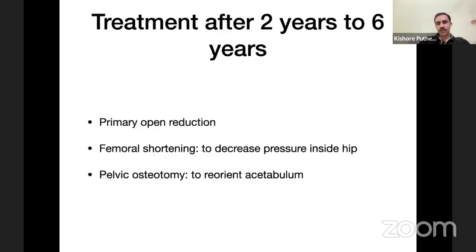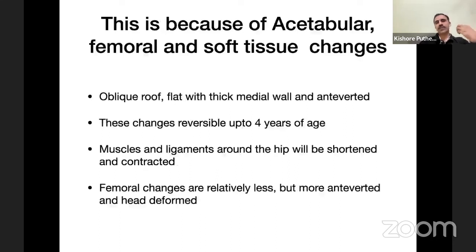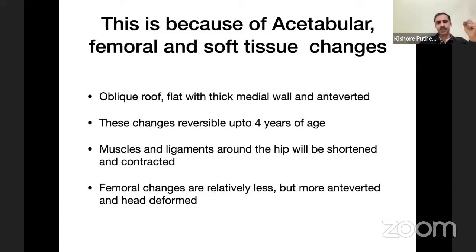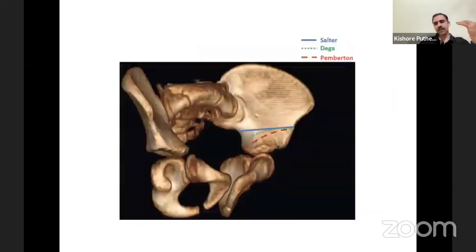Treatment after two years is more complicated because of acetabular and femoral changes. The treatment is primary open reduction with femoral shortening to decrease pressure inside the hip, plus pelvic osteotomy to reorient the acetabulum. The acetabular roof becomes oblique, flat, with a thick medial wall and becomes anteverted; these changes are reversible up to four years. Muscles and ligaments become shortened. Femoral changes are relatively less but the head becomes smaller and deformed.